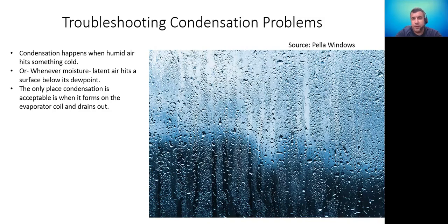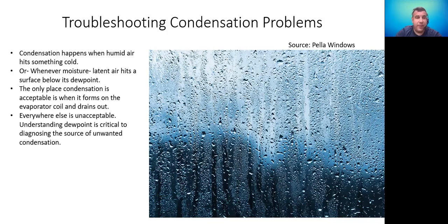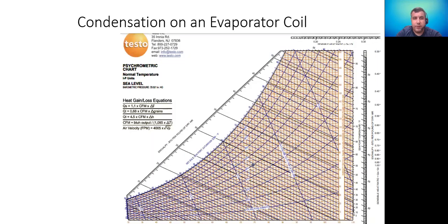The only place condensation is really acceptable is when it forms on the evaporator coil and drains out, because that's how we dehumidify a space. Everywhere else is unacceptable. If we see condensation forming anywhere else, that's a problem and we need to troubleshoot it and recommend a solution. Understanding dew point is critical to diagnosing the source of unwanted condensation.